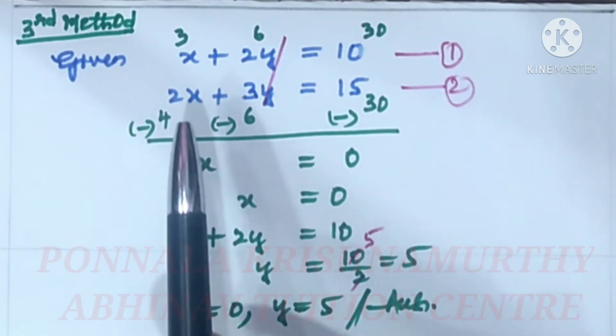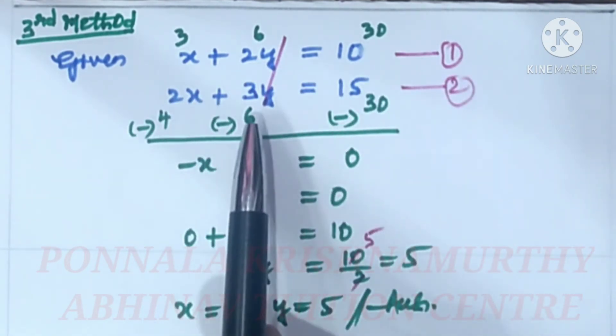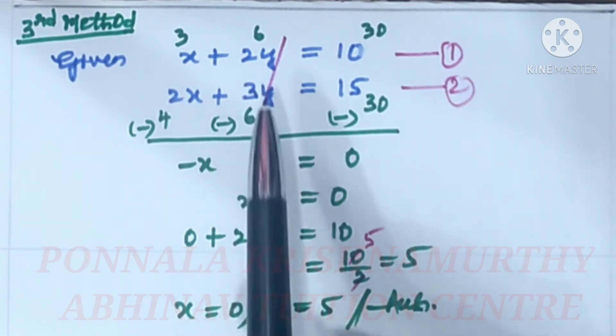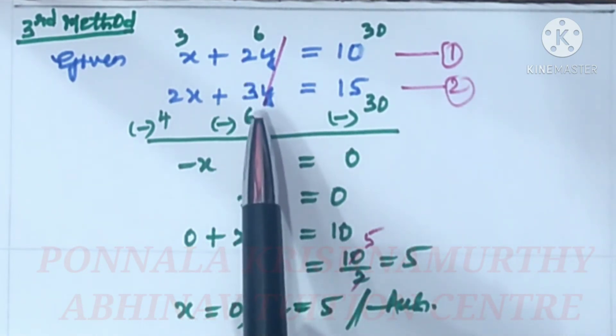Third method. Given x plus 2y equal to 10, equation 1. 2x plus 3y equal to 15, equation 2. Now we want to cancel y terms. We have 2 here, 3 here. LCM for these 2 is 6.